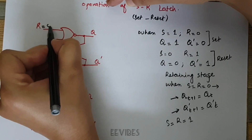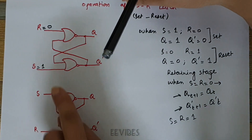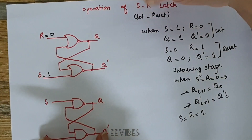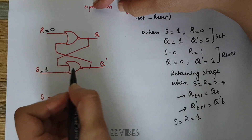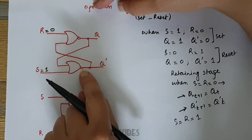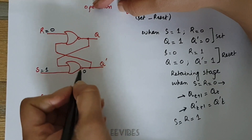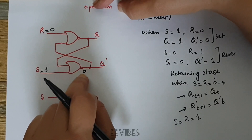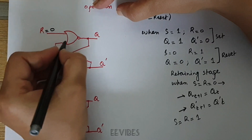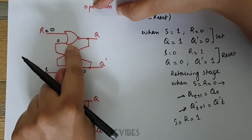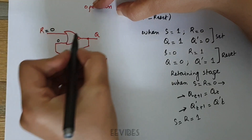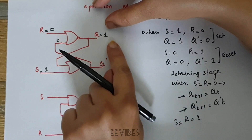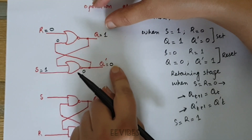Starting with the operation when we set S equal to 1 and R equal to 0 — the output should be in the set state. When you make S equal to 1, if any input of the NOR gate is set equal to 1, its output must be equal to 0 no matter what the other input is. So this 0 is fed back to the first NOR gate, and when both inputs of the NOR gate are equal to 0, output Q will be equal to 1. In this way the output is set, and Q-bar is produced as the complement, which is equal to 0.